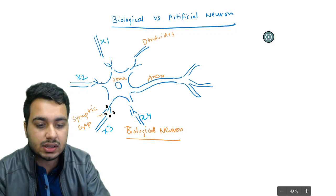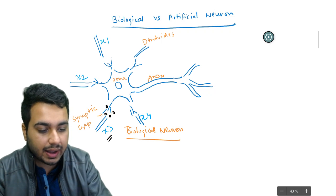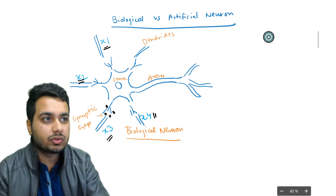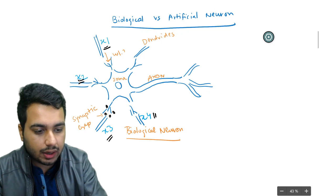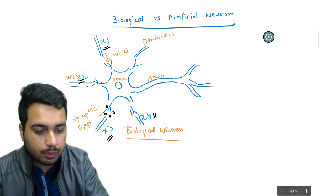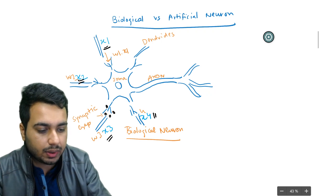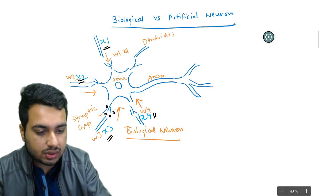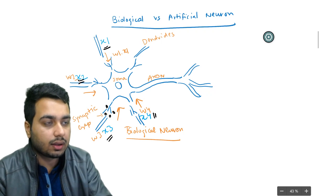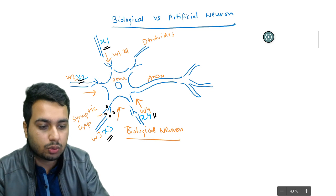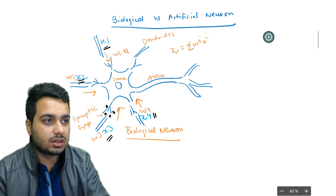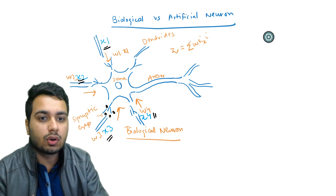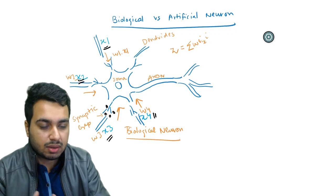These signals are in the form of electrical and chemical impulses, and the chemicals modify the actual input. So the original input x1 becomes a weighted input w1 times x1, similarly w2·x2, w3·x3, and w4·x4. These weighted inputs go into the soma, which computes a value z — the total input — defined as the summation of wi times xi.